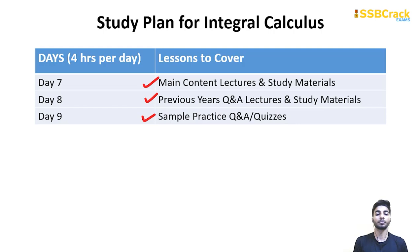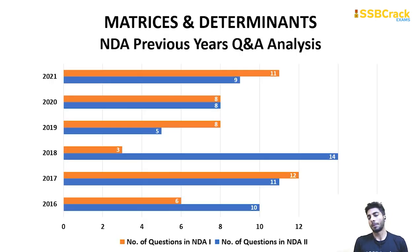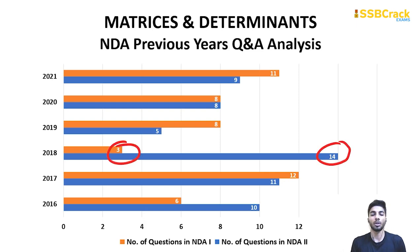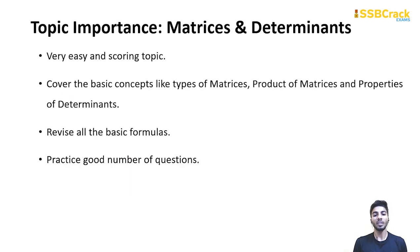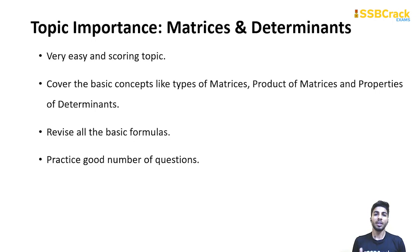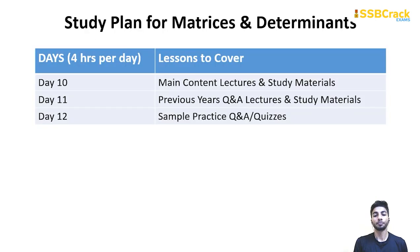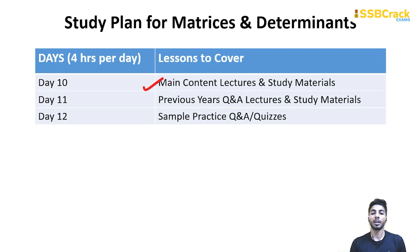Matrices and determinants is a very important and scoring topic, with a maximum of 14 questions and a minimum of 3. You just need to cover properties of matrices and properties of determinants. Practice a good number of questions. Devote 4 hours per day from day 10 to day 12, covering main content, previous year questions, and sample practice.